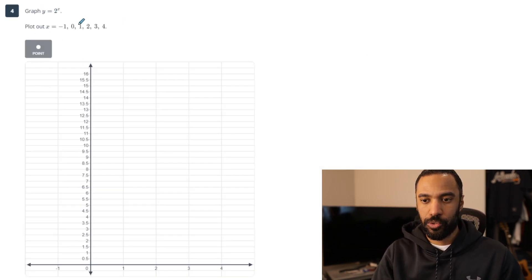Okay. Number 4. Graph y equals 2 to the x. Plot out negative 1, 0, 1, 2, 3, and 4. If you use a table, it's possible you can just do 2 to the first, 2 squared, 2 cubed, 2 to the fourth, 0, all that stuff. Not too bad. I will go table-lessly on this.